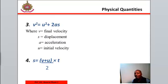The third one is v squared equal to u squared plus 2ax, where v still remains final velocity, x displacement, a acceleration, u initial velocity.